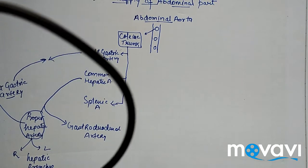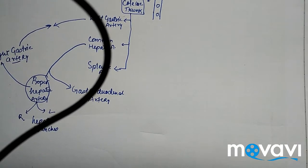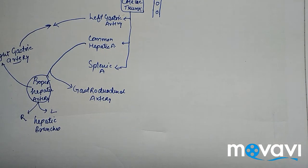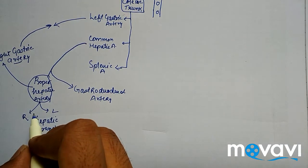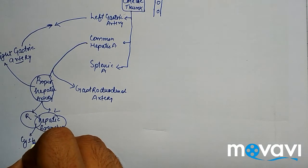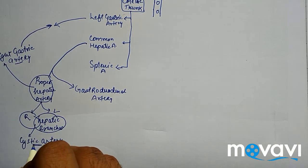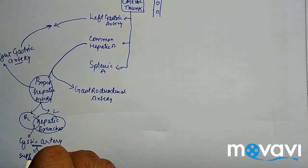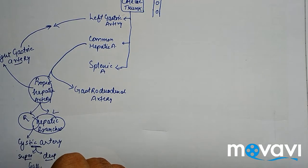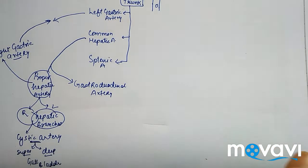The proper hepatic artery divides into right and left hepatic branches. The right hepatic branch gives off a further branch called the cystic artery. The cystic artery divides into two parts: the superficial division and the deep division, and this cystic artery supplies the gallbladder.